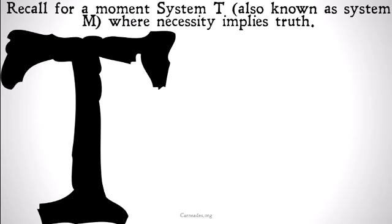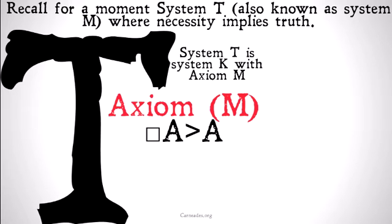So, recall for a moment, System T, also known as System M, where necessity implies truth. System T is going to be System K with Axiom M or Axiom T, different people call it different things, added in.